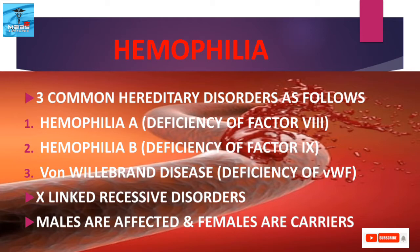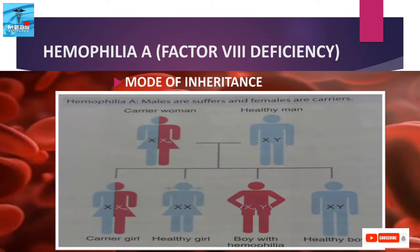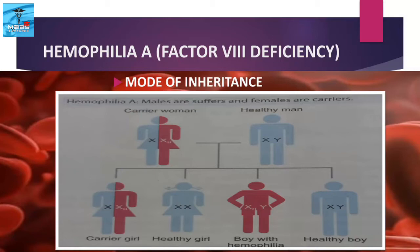Haemophilia are X-linked recessive disorders, where males are affected and females are carriers. The genes for factor 8 are located on the long arm of the X chromosome. Males with a defective or mutant factor 8 gene on their X chromosome suffer from Haemophilia. Heterozygous females are carriers and do not express the full clinical disease because of the paired normal X chromosome. However, females with two copies of the defective X chromosome may rarely suffer from Haemophilia.